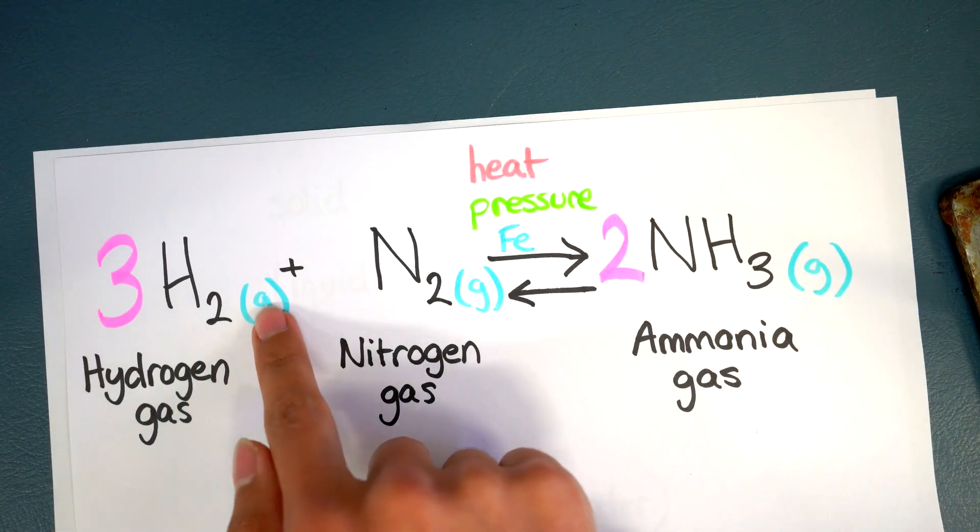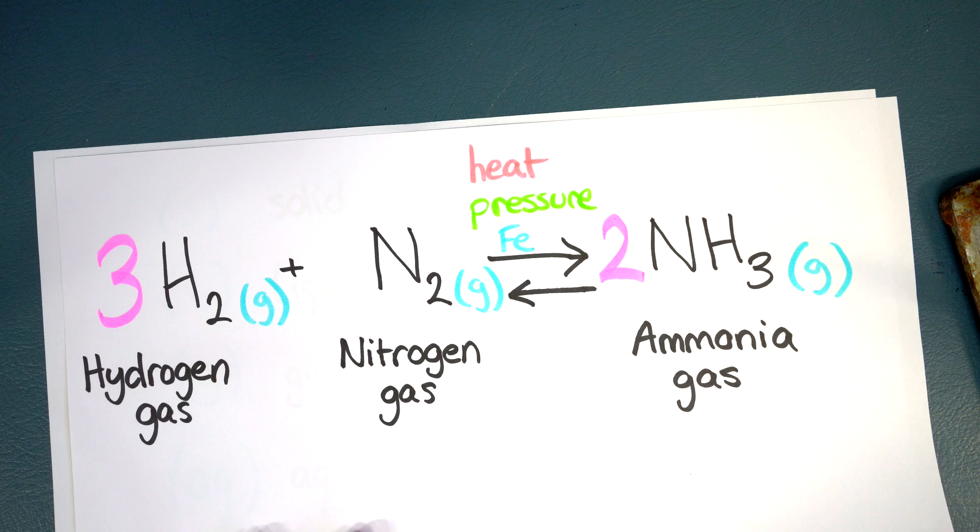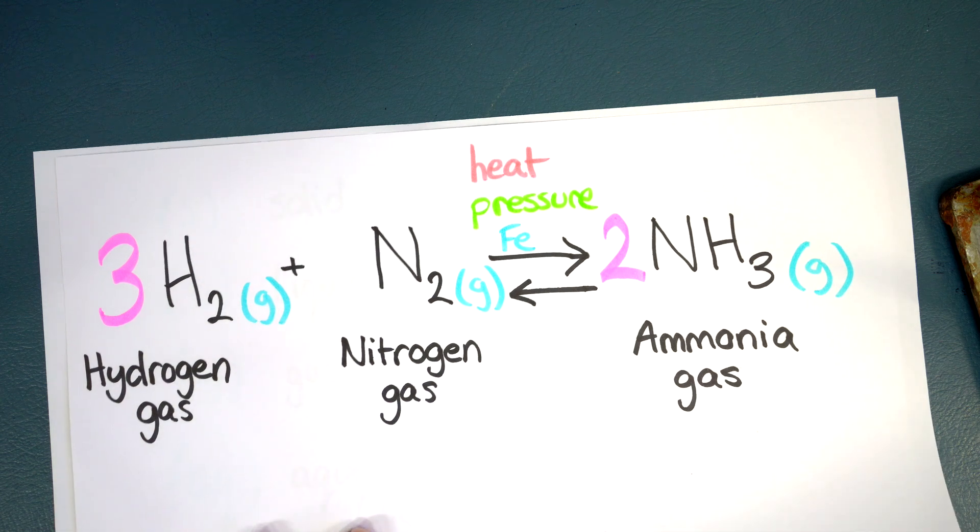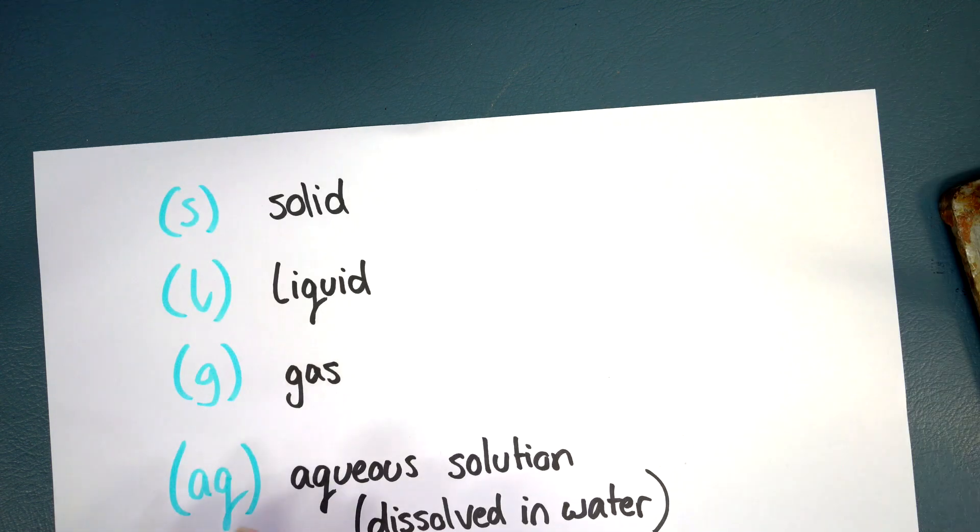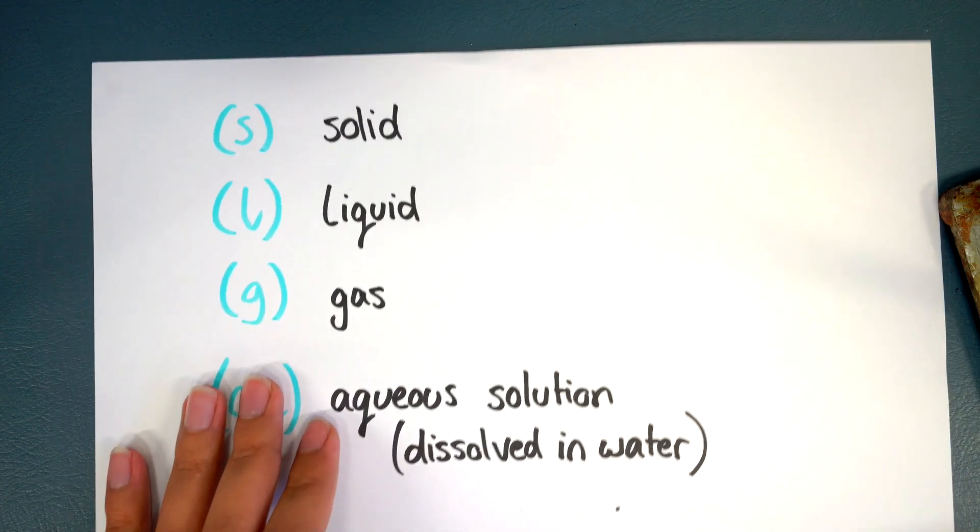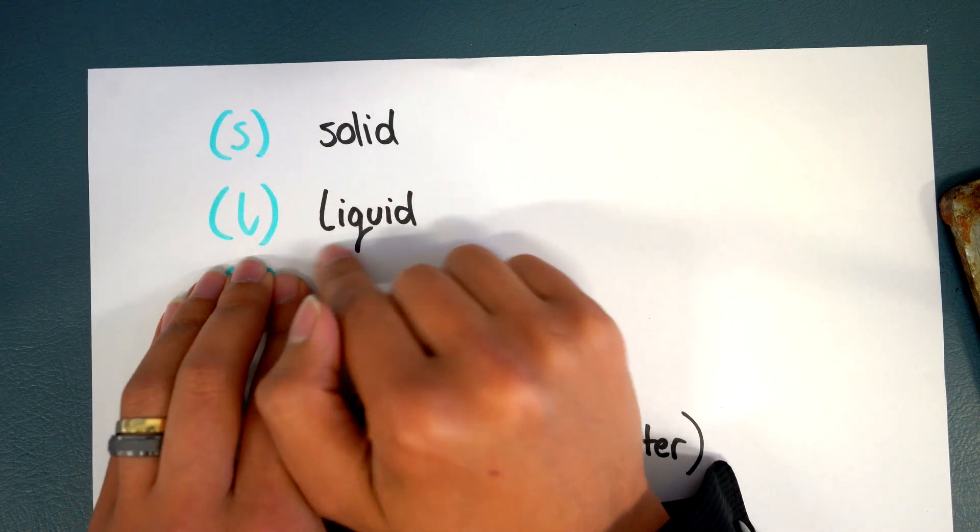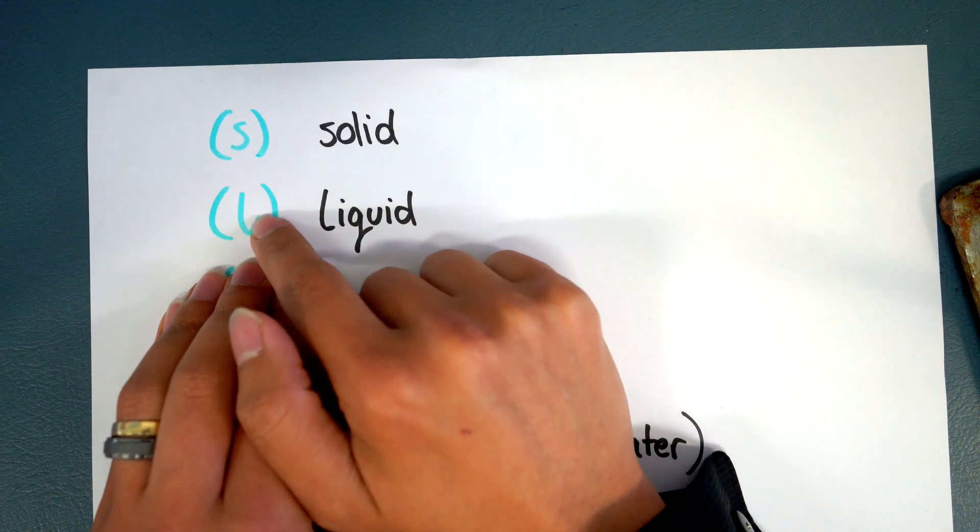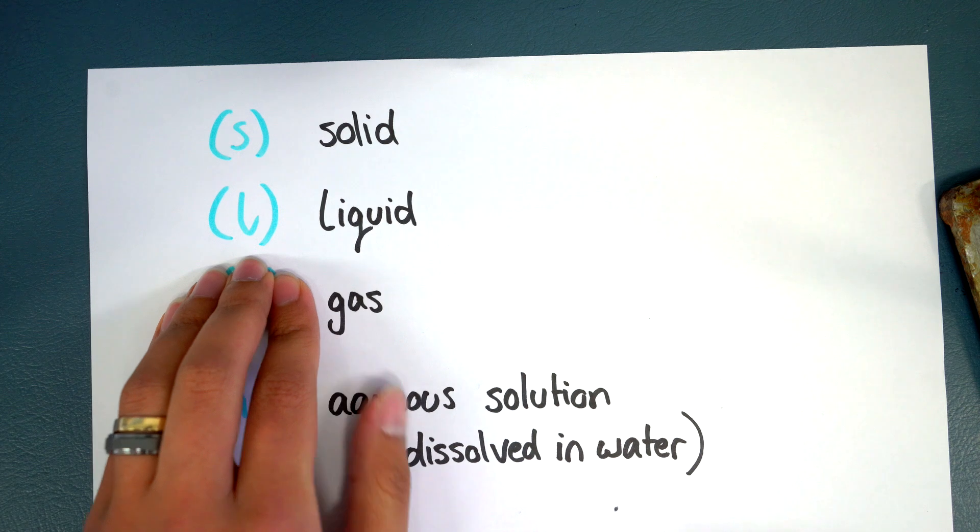And in case you're not familiar with what these little symbols are, these are little indicators for what physical state of matter these substances are. So the S is for solid, L is for liquid and I usually try and give it a bit of a tail to really emphasize it's a letter L.